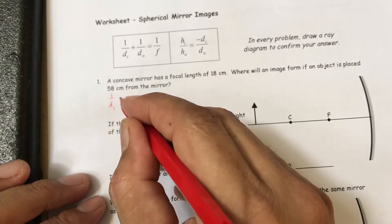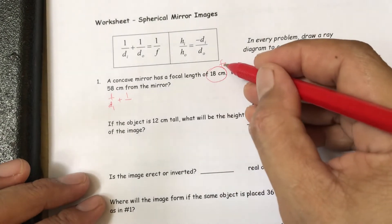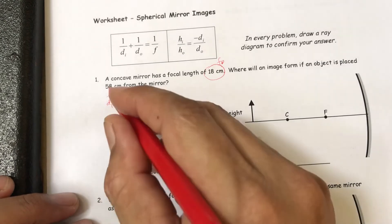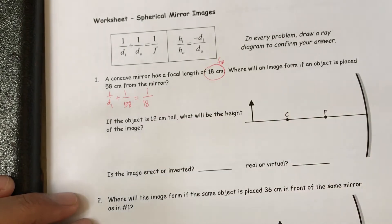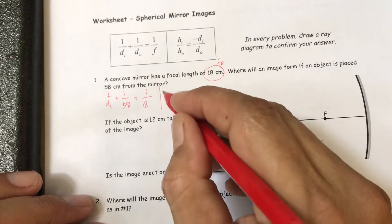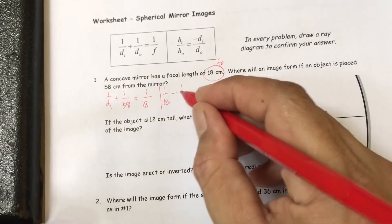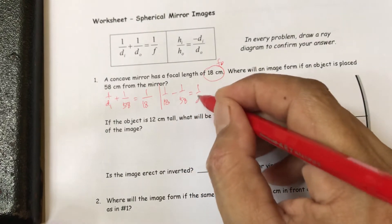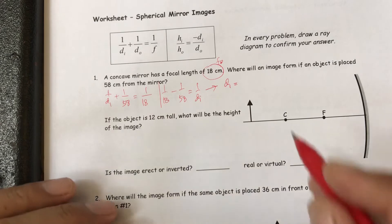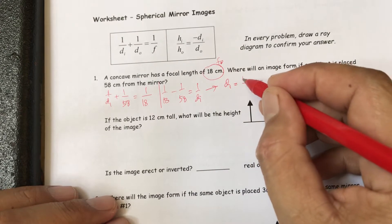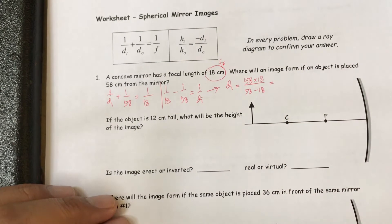We use: 1/d-i plus 1/d-o equals 1/f. Here d-o is 58 and f is 18. So 1/d-i equals 1/18 minus 1/58, which gives d-i equals 58 times 18 divided by 58 minus 18.